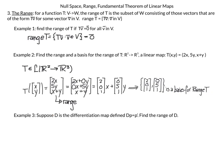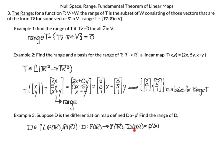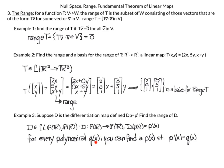For our third example, suppose D is the differentiation map on polynomials: D takes a polynomial and returns its first derivative. D is in the space of linear transformations from polynomials to polynomials. For every polynomial q(x), you can always find p(x) such that p'(x) equals q(x) — just integrate. Therefore, the range of D is the entire polynomial space.